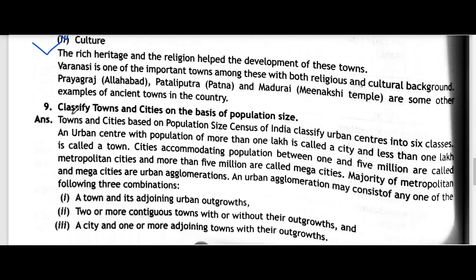Question number nine: Classify towns and cities on the basis of population size. The Census of India classifies urban centers into six classes. An urban center with a population of more than one lakh is called a city, and less than one lakh is called a town. Cities accumulating population between one and five million are called metropolitan cities, and more than five million are called megacities. The majority of metropolitan and megacities are urban agglomerations.